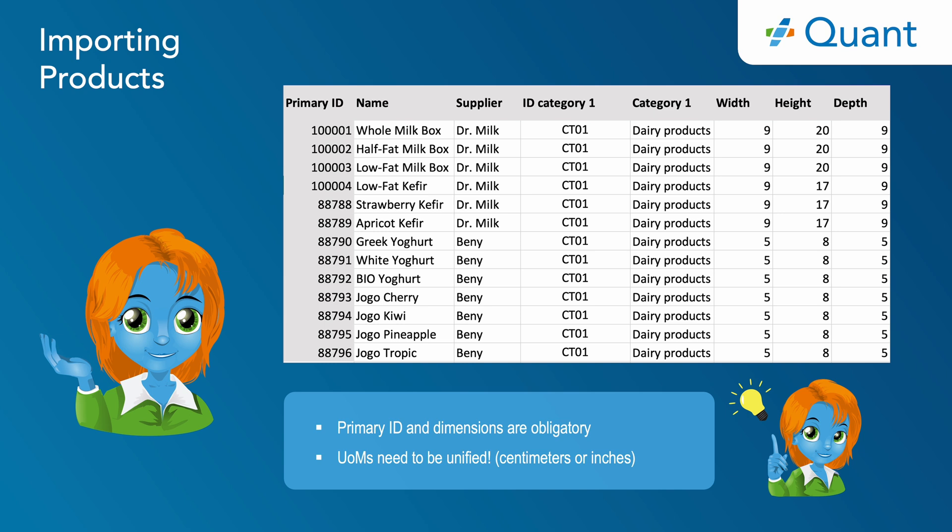You can also include information which will help you with the categorization of the products, such as supplier, brand, product category, etc. Once the file is ready, please follow me in the next steps.